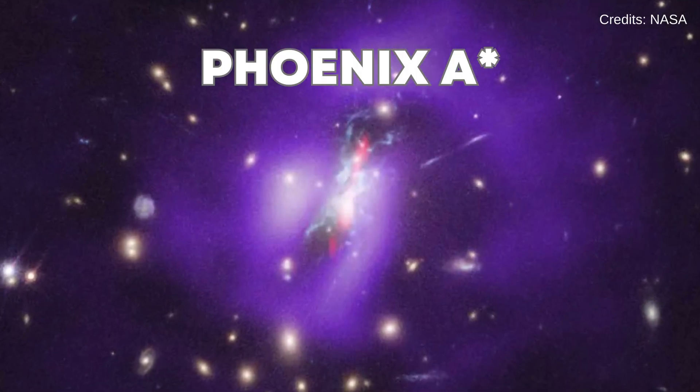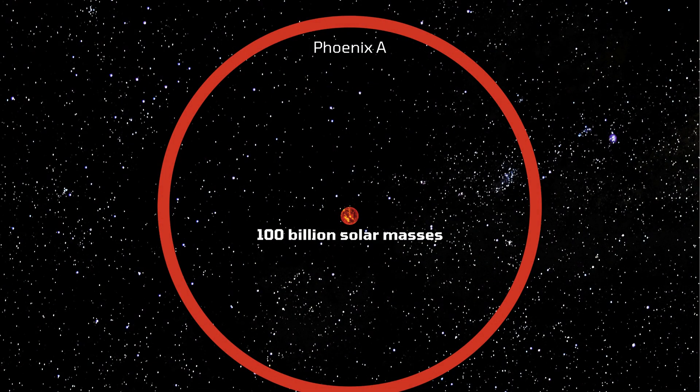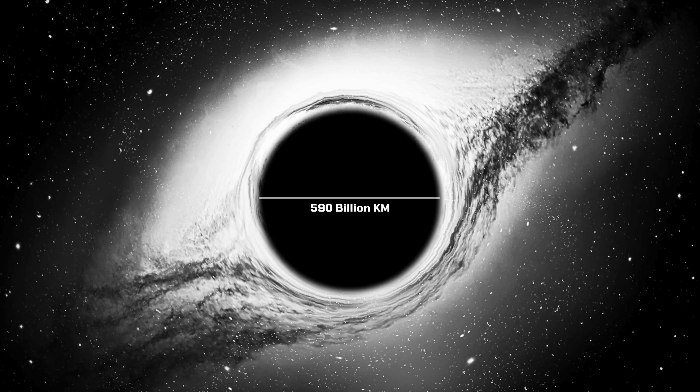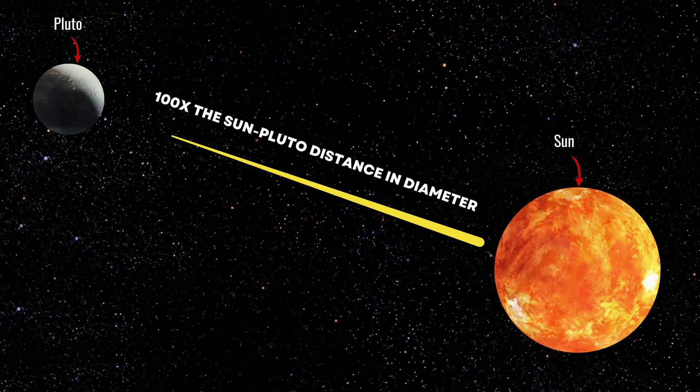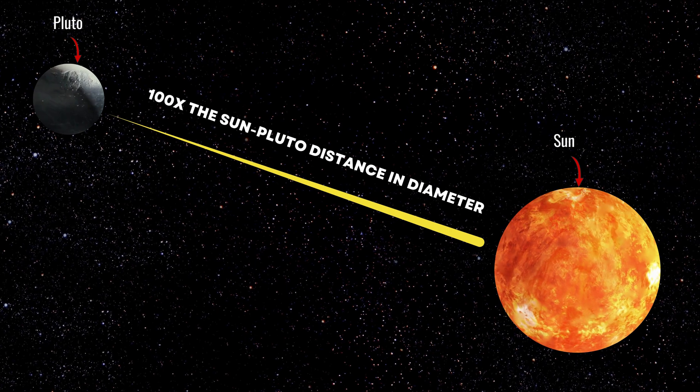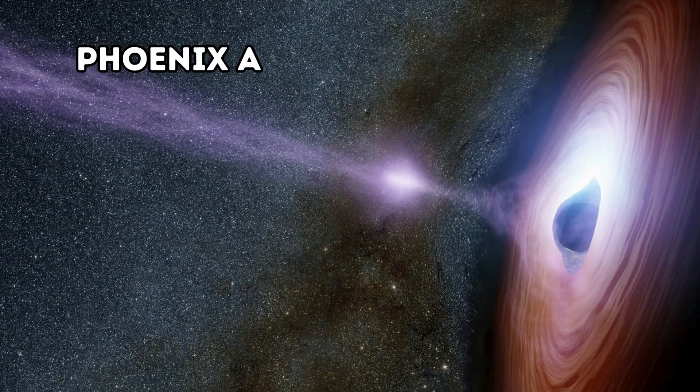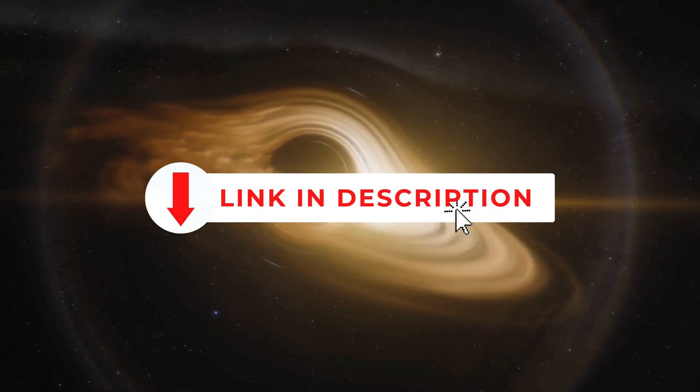The most massive black hole ever discovered is the Phoenix A. It has a mass of 100 billion suns and a diameter of 590 billion kilometers. This diameter is 100 times the distance between the Sun and Pluto. If you want to know more about Phoenix A black hole, tap on the top right corner of the video or find the link in the description.